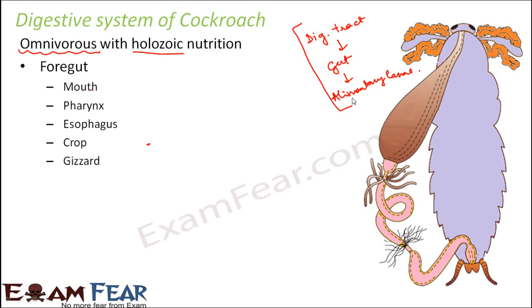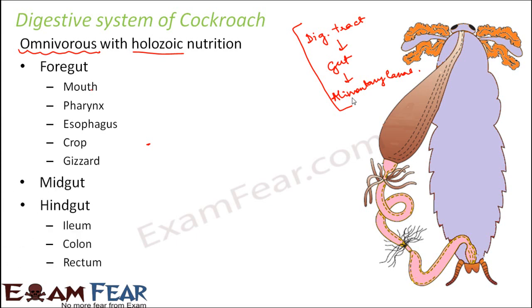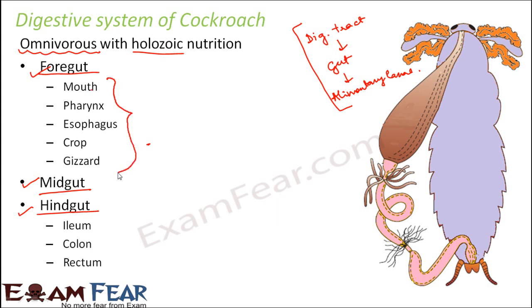In the digestive tract of cockroach, the different organs are organized into three parts: foregut, midgut, and hindgut. The foregut is at the starting end and includes the mouth, pharynx, esophagus, crop, and gizzard — these are the organs which together form the foregut.